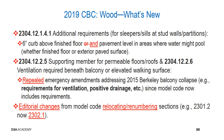In 2304.12.2.5 for supporting members of permeable floors and roof decks, and 2304.12.2.6 for ventilation beneath balconies or elevated walking surfaces — related to the 2015 Berkeley balcony collapse — the emergency amendments have been repealed because the model code now includes requirements for ventilation, positive drainage, and related provisions. There have been further editorial changes from the model code, including renumbering sections due to definitional changes relocating chapter-specific definitions to chapter two.